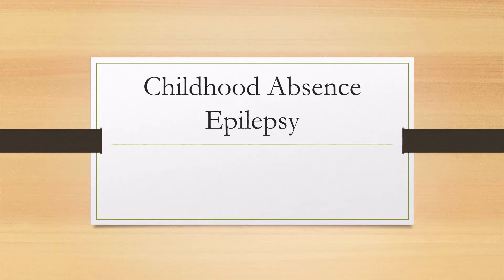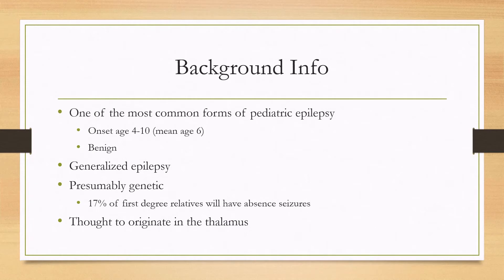Let's talk about childhood absence epilepsy. This is one of the most common forms of pediatric epilepsy. It is considered benign and the average age of onset is somewhere between four and ten years old, most commonly age six. It's a generalized epilepsy and presumably genetic — about 17% of first-degree relatives may also have absence seizures.